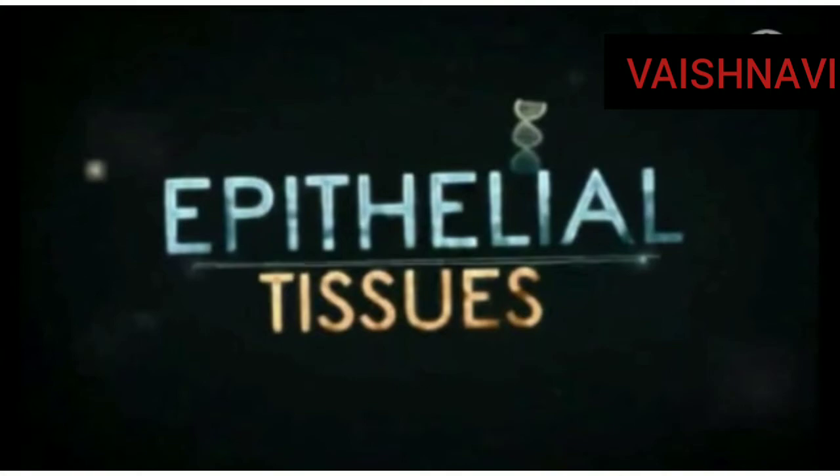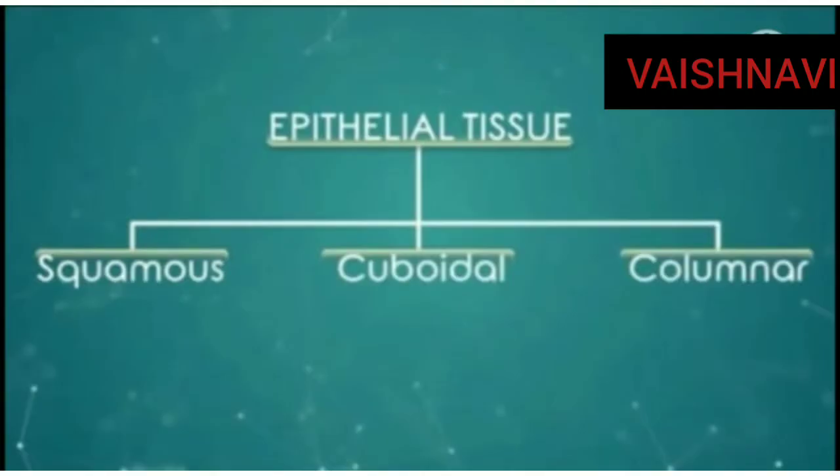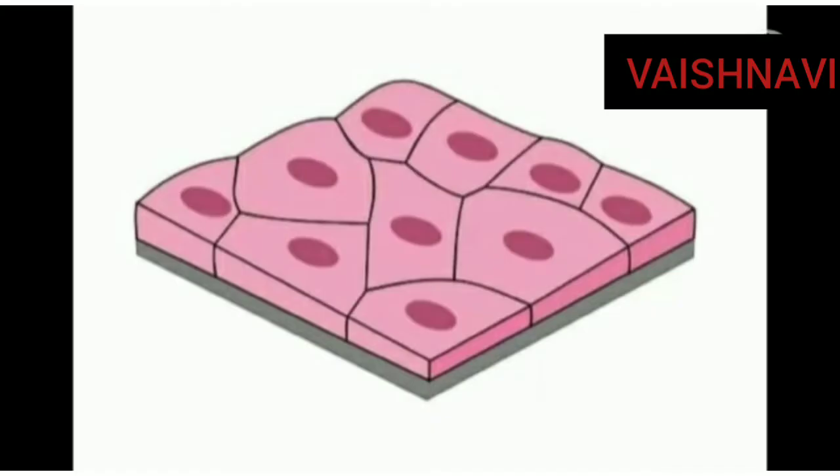Epithelial tissue is divided into three types: squamous epithelial tissue, cuboidal epithelial tissue, and columnar epithelial tissue.